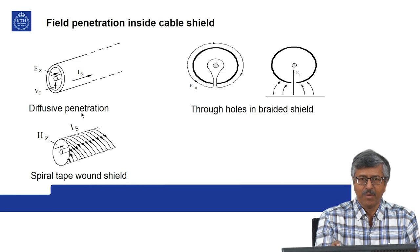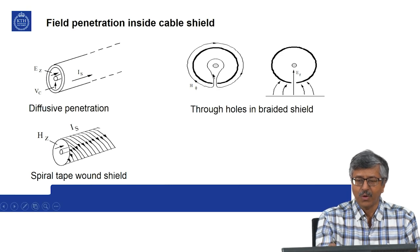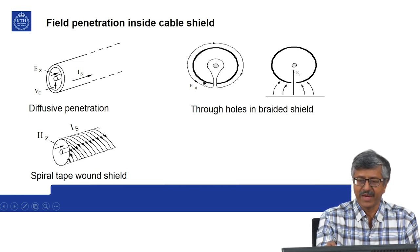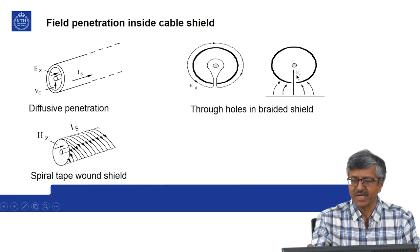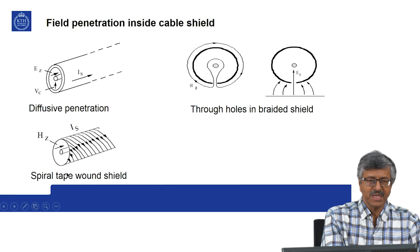Often the shield is in the form of a braid — weaved wires for the sake of flexibility — and through the holes of the braid you can have field penetration. An example of magnetic field penetration to the inner conductor from outside is shown, and also a case of electric field penetration. So through holes in a braided shield, field can leak through.